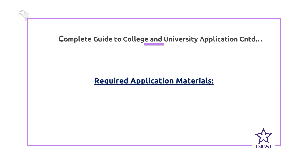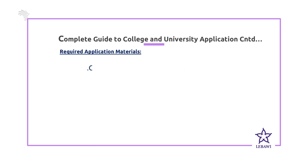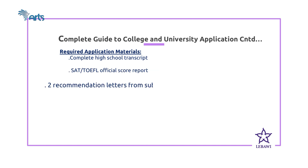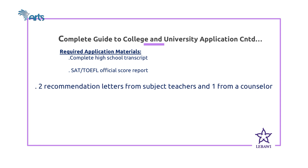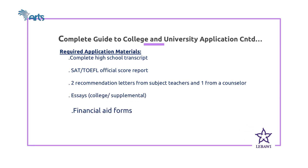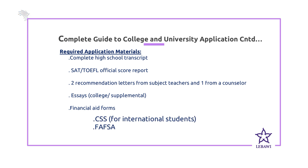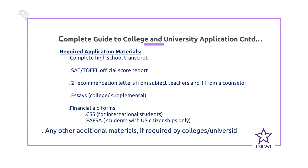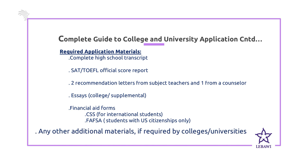The required materials for college application are: first, a complete high school transcript; second, SAT or TOEFL official score reports; next, two recommendation letters from subject teachers and one from a counselor; followed by essays, which are supplemental and college essays. Students also need financial aid forms — the CSS and FAFSA. The CSS is for international students, while the FAFSA is for students with US citizenship only. If required by a school, students can provide additional materials.